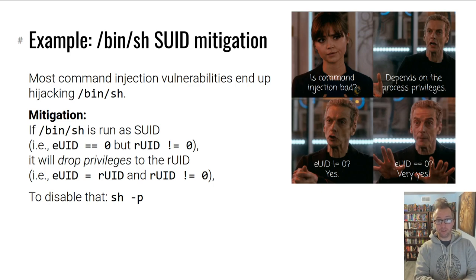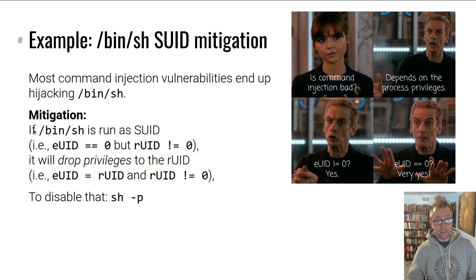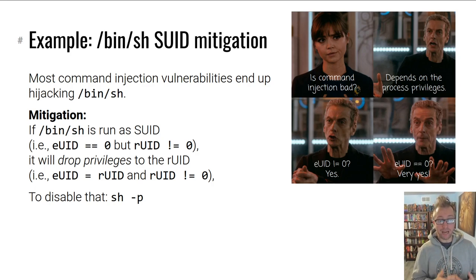If the program runs as root and you can hijack it — or do a command injection through some mishandling of input — that causes you to be able to run commands as root. That's obviously brutalizing to the security of the system. So a mitigation was created: for modern implementations of command interpreters or shells, if the shell is running as setUID — so if its effective user ID is root but its real user ID is not root, if it's kind of temporarily root — it will actually drop privileges back down to the real user ID for safety reasons, because almost always this was a sign of a command injection being exploited to achieve privilege escalation.